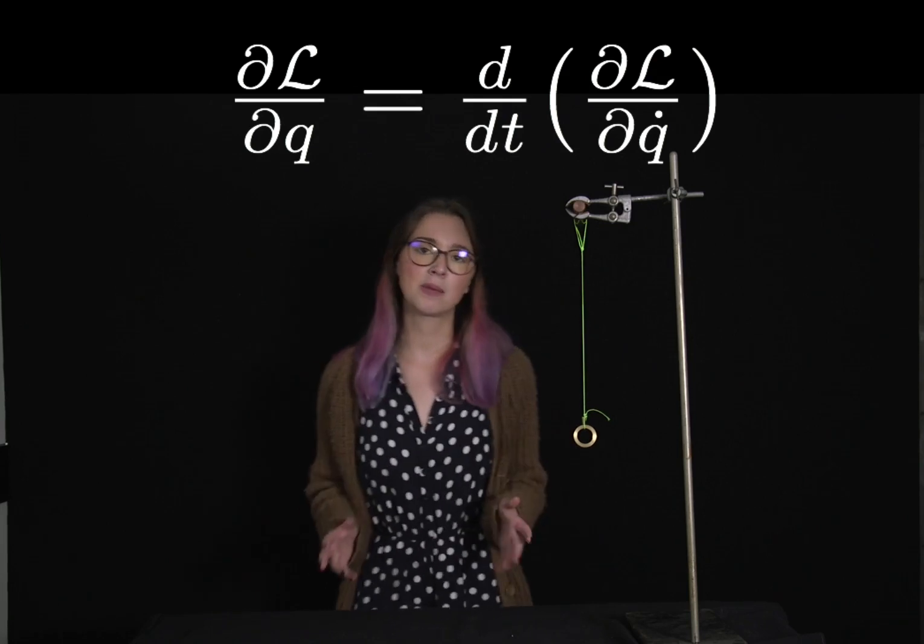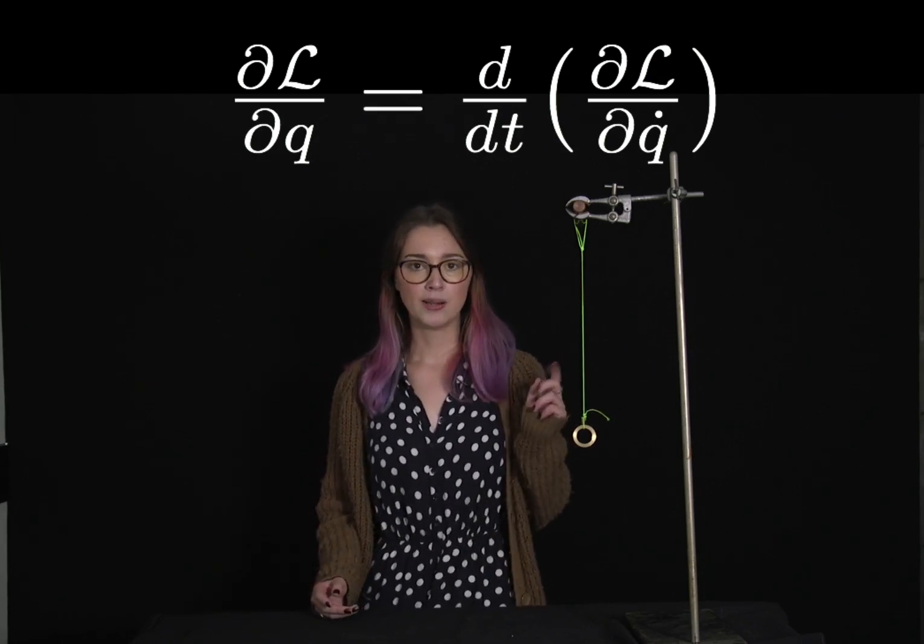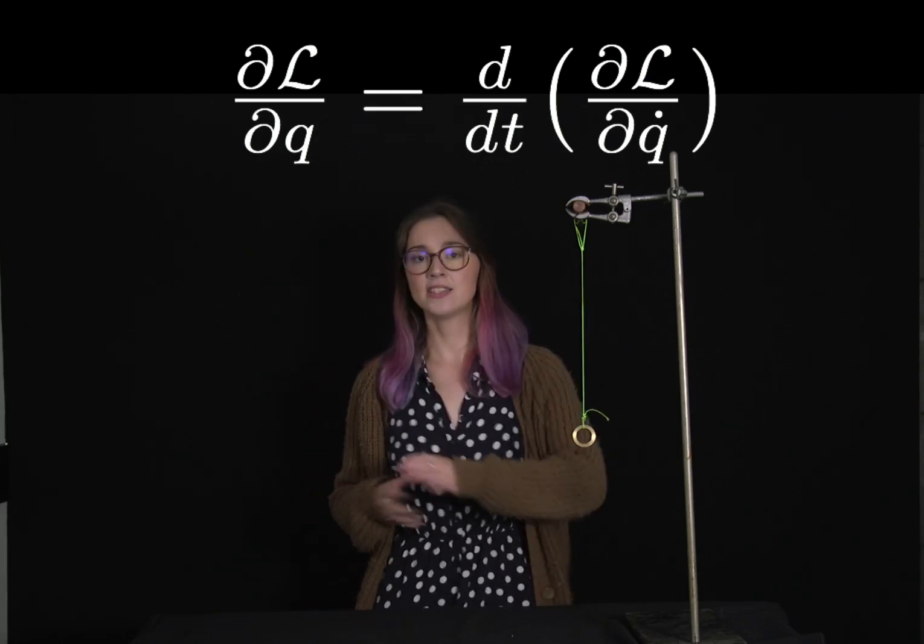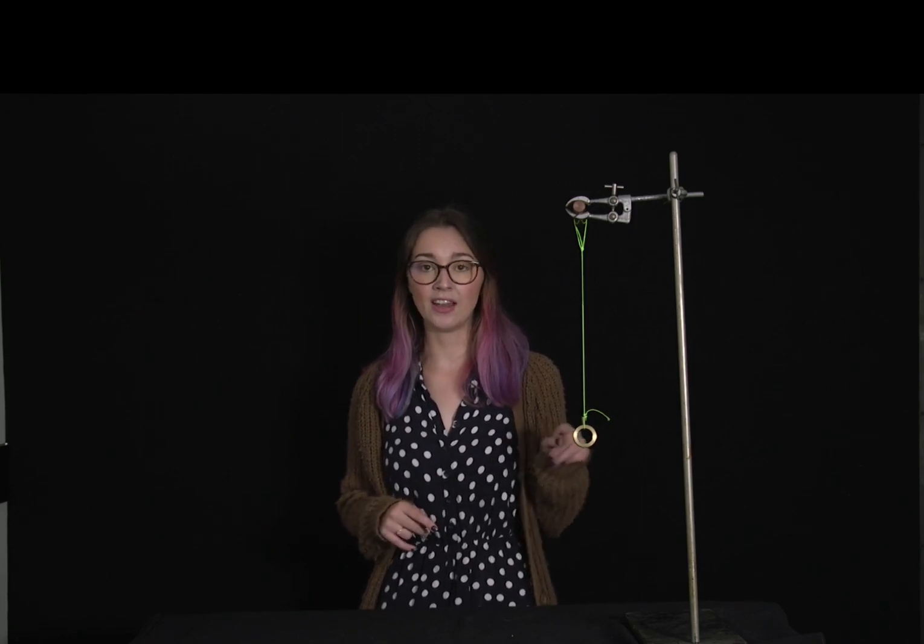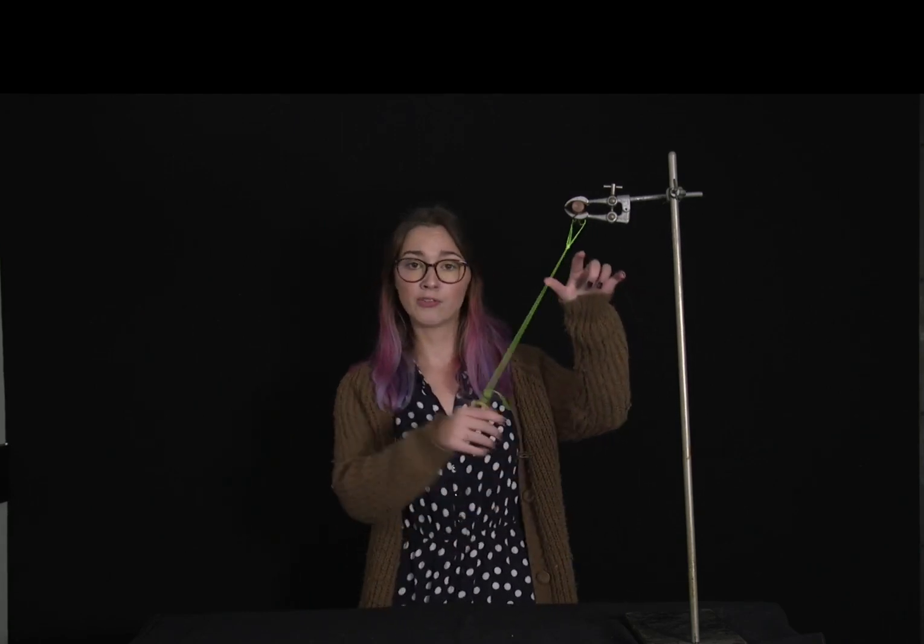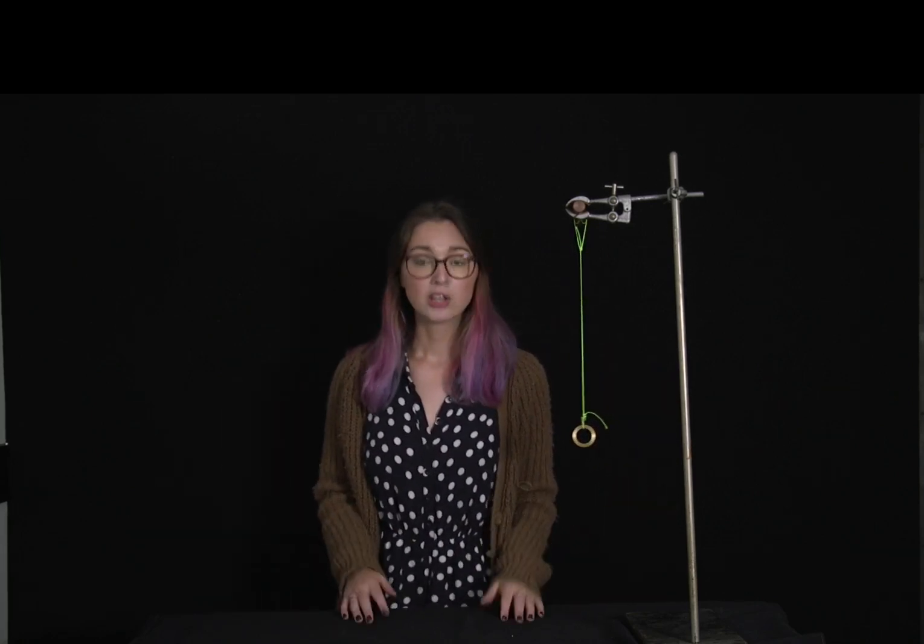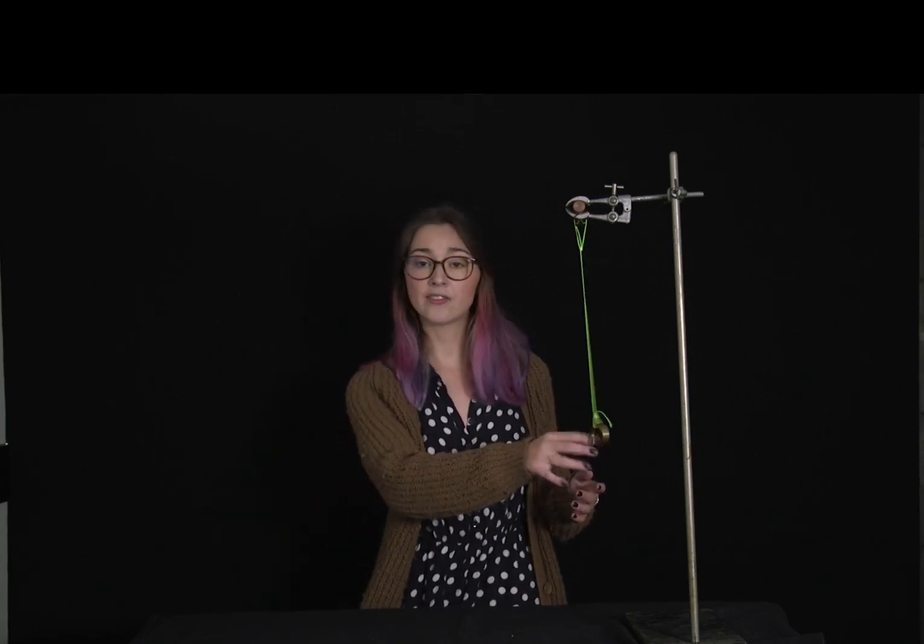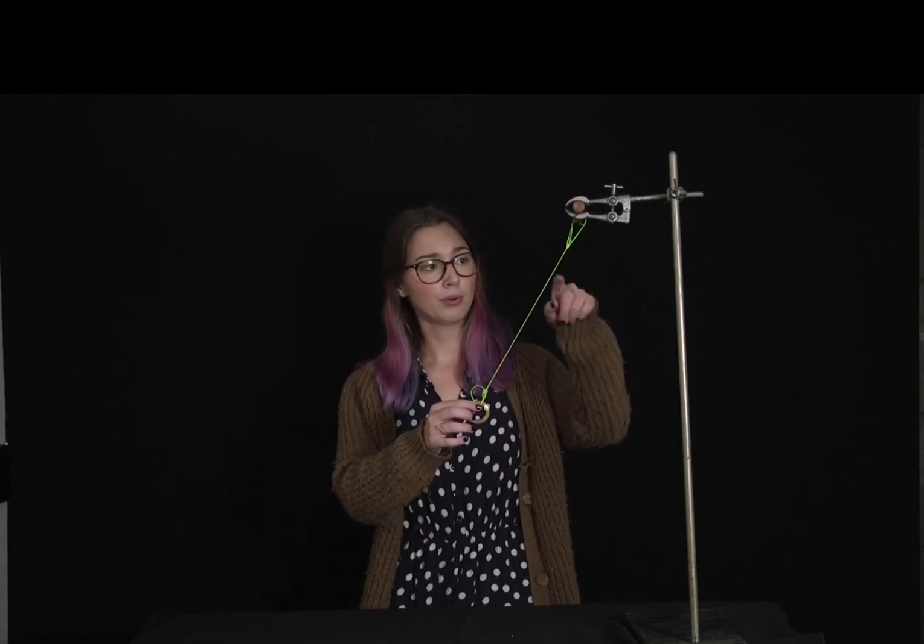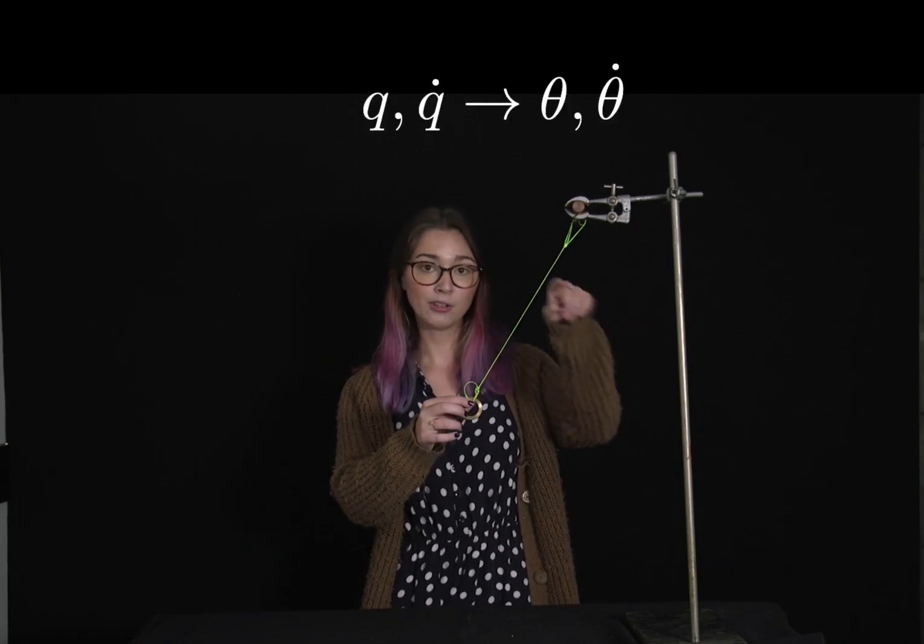Probably the weirdest thing about this is the Q. This Q is simply representing our coordinate. I said previously that we're not restricted to just using our X and Y Cartesian coordinates. We can use the angle of our pendulum, and there's plenty of other different systems too. So this Q is simply representing that. For example, in the case of a pendulum, our Q, our coordinate, would be our angle here.